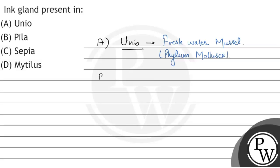Option B is Pila. Pila is also a member of phylum Mollusca and it is known as the apple snail.